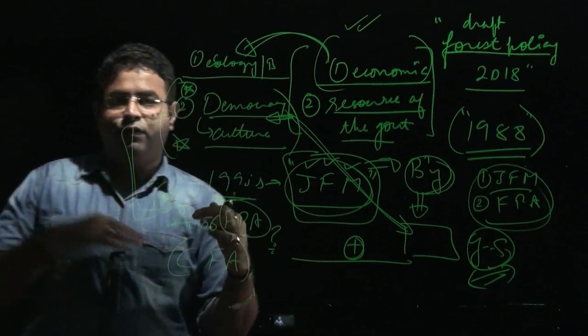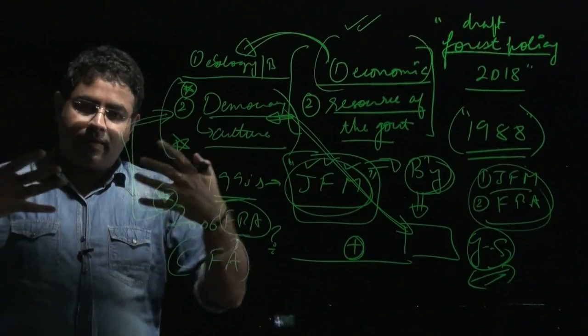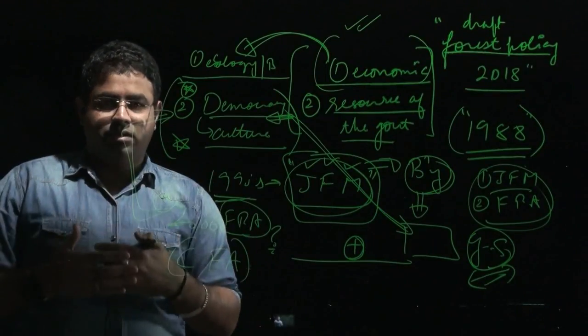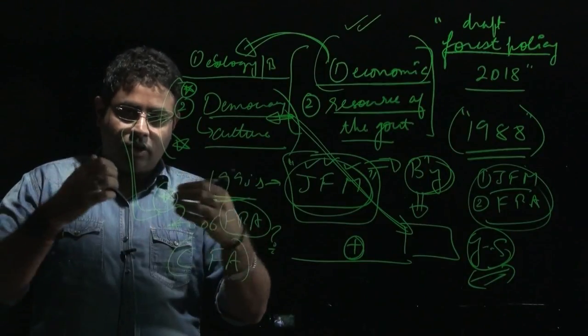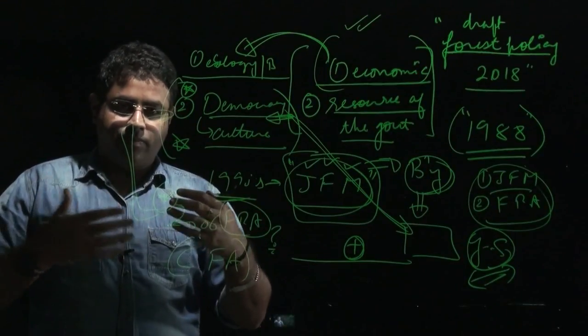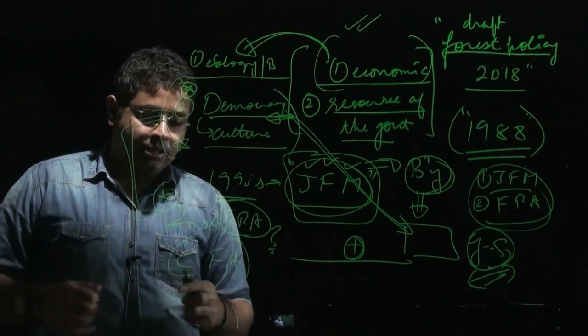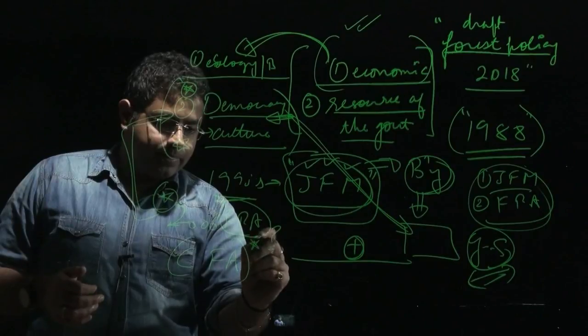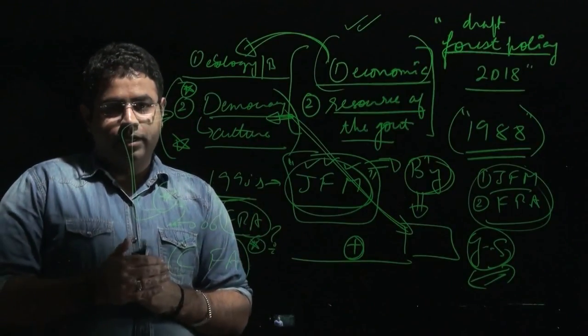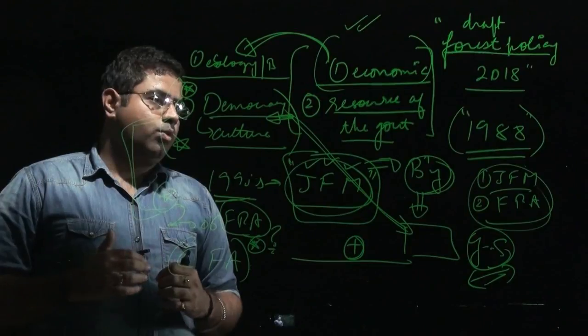The Forest Rights Act and the Compensatory Forest Act are actually against each other. They are contrary to each other - there is something opposite that is wished by both these acts. Because the Compensatory Forest Act is not in consonance with the Forest Rights Act, it actually takes away the principle of democracy.